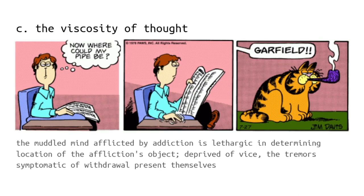In this third arrangement, the viscosity of thought, John first wonders where could his pipe be, and then muses it over. He's trying to read his paper, but tragically his hand is tremoring on the table beside him. This is symptomatic of withdrawal — he's dependent on the nicotine; it's gone beyond a compulsion towards a full-fledged addiction. Through his mind, muddled and addled by the influence of the drug, his lethargic mind finally realizes where it must be. He calls out, Garfield. But Garfield is not there, and John continues to tremor.